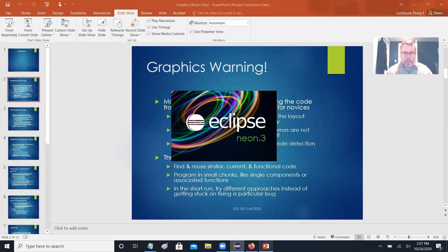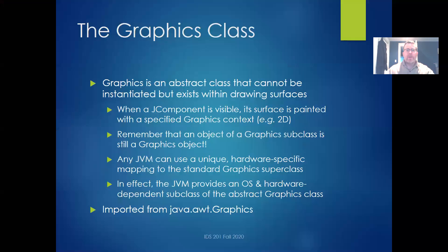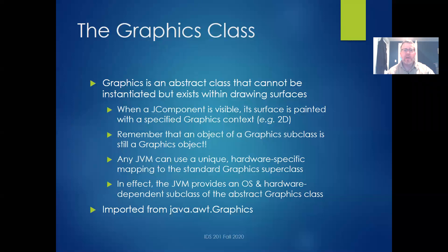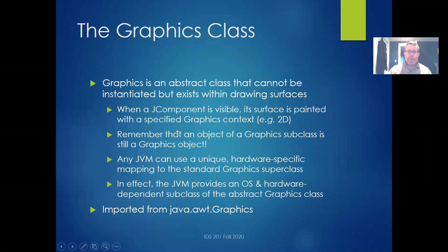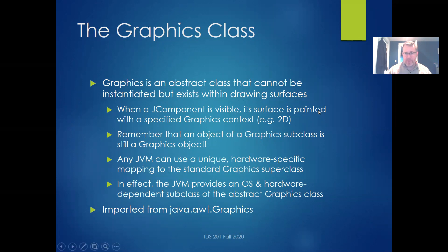I'm going to fire up Eclipse and we'll get started. First of all, the Graphics class. Graphics is an abstract class — we mentioned abstract classes when we talked about interfaces. An abstract class means you can't create objects of Graphics itself; it's a superclass. You can create objects of Graphics subclasses, but not of Graphics itself. When we're drawing something — those of you who saw the Connect 4 demo — we use a Graphics object as a paintbrush. All subclasses of Graphics are still special types of Graphics and can do everything a regular Graphics object can do. The one we'll typically use is Graphics2D, a basic two-dimensional brush.